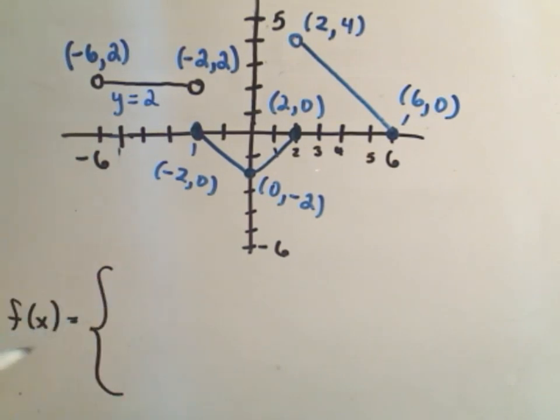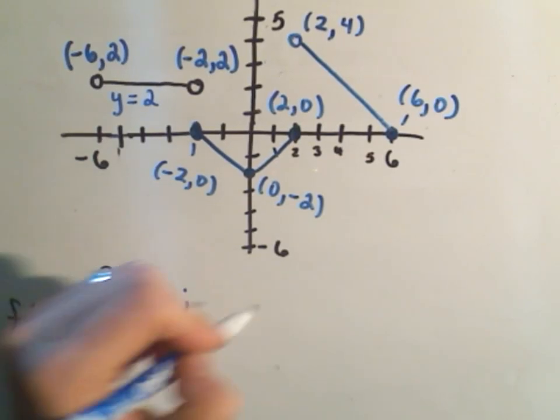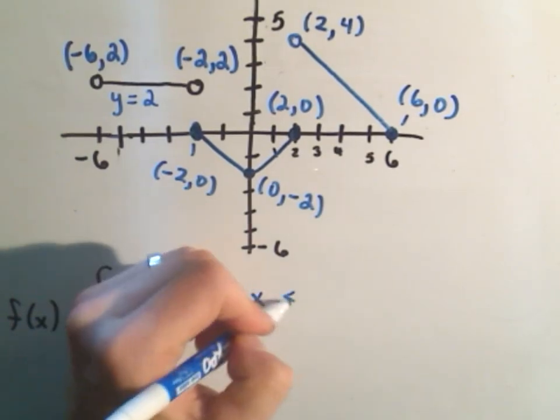So we don't write the y equals. That's kind of what the f(x) is for. f(x) is the same thing as y. So it says y equals 2. And then we have to make a restriction, though, on the x coordinates.